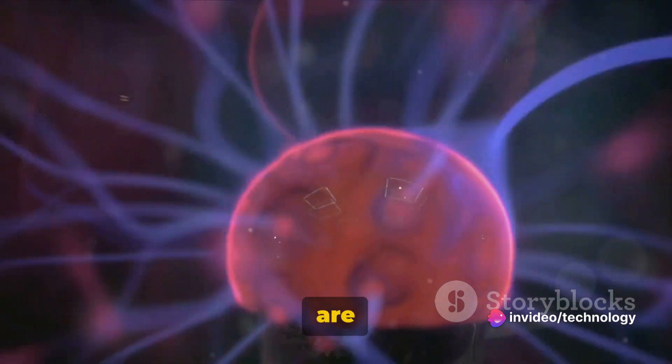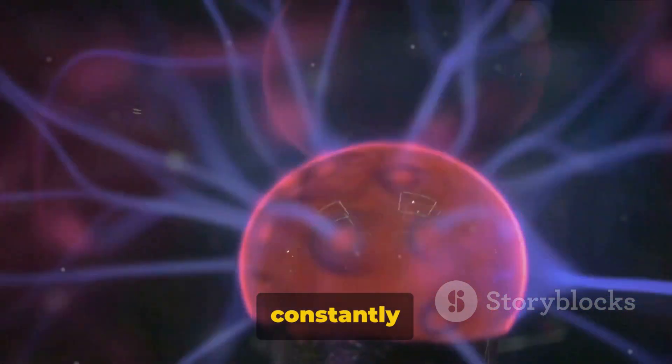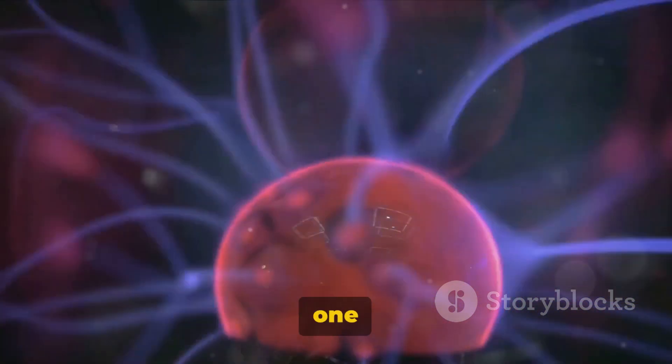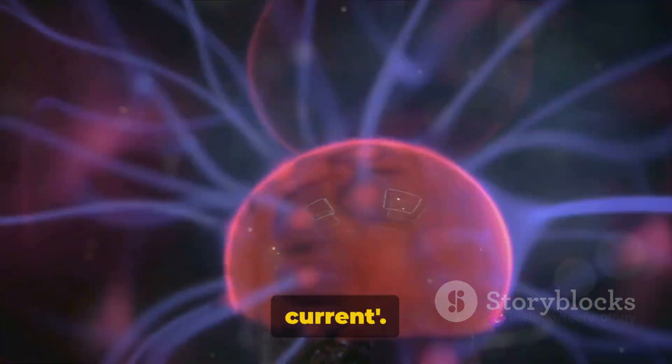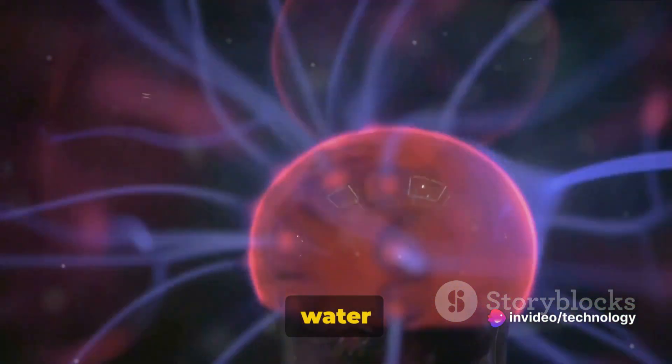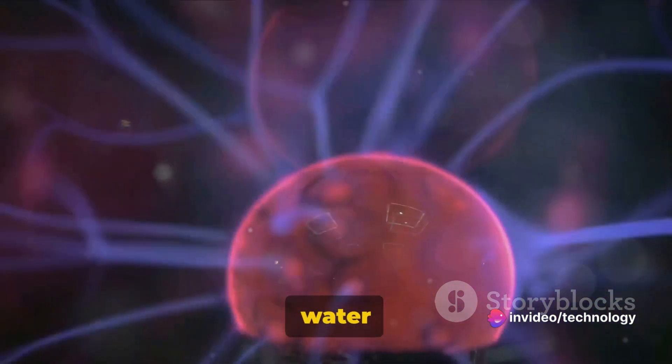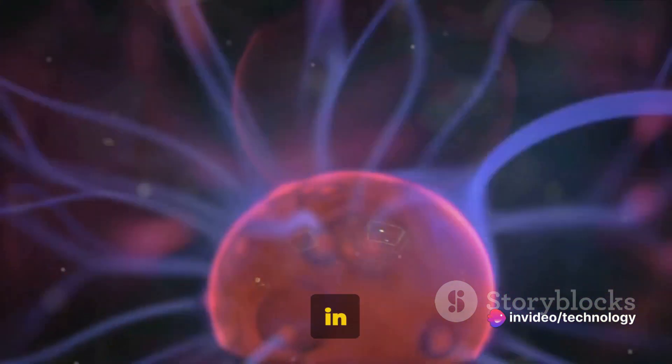Picture this. Electrons are on a never-ending journey, constantly moving and jumping from one atom to another. This movement is what we call an electric current. It's comparable to water flowing through a river. The water molecules like our electrons are in constant motion, creating a current.